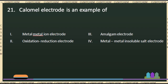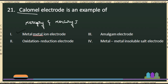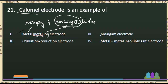The first question: the Calomel electrode is an example of what? The options are metal-metal ion electrode, oxidation-reduction electrode, amalgam electrode, or metal insoluble salt electrode. The right answer is metal-metal ion electrode.